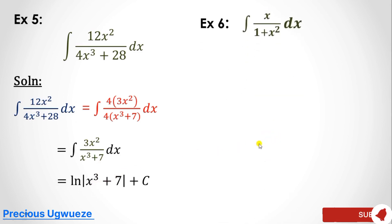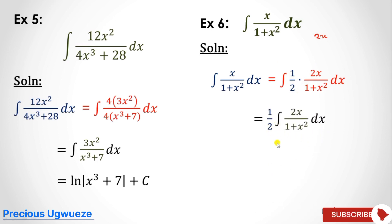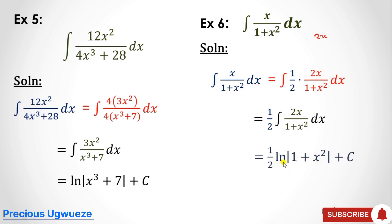Example 6: the derivative of the denominator is 2x, but the numerator is just x, not 2x. We multiply the numerator by 2 and compensate by multiplying by 1/2, so we haven't changed the function. We bring out the 1/2, the condition is now satisfied, and the solution is (1/2)·ln of the denominator function plus C.